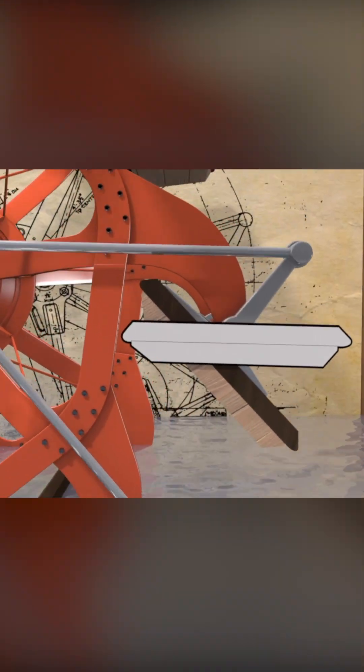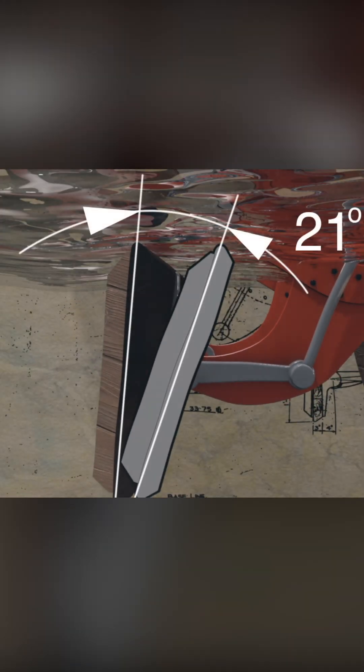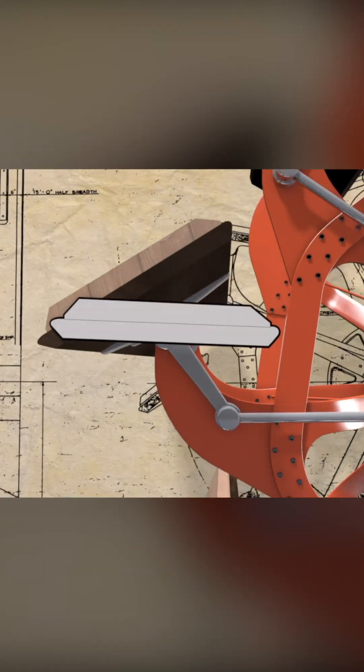By overlaying a paddle wheel with a feathering system over one without, we can see that the floats are 29 degrees closer to vertical upon entering the water and 21 degrees closer to vertical on exiting than those without feathering.